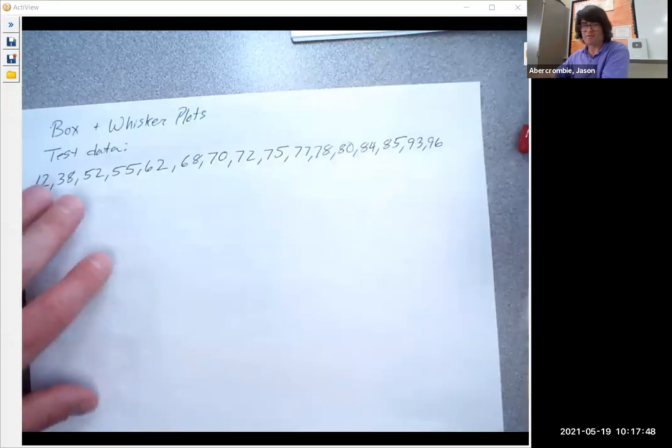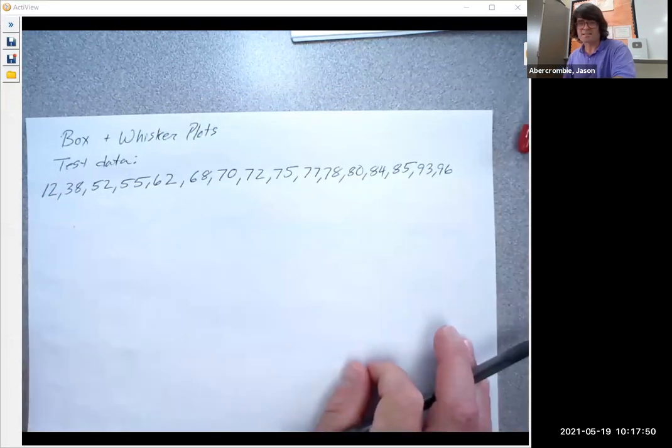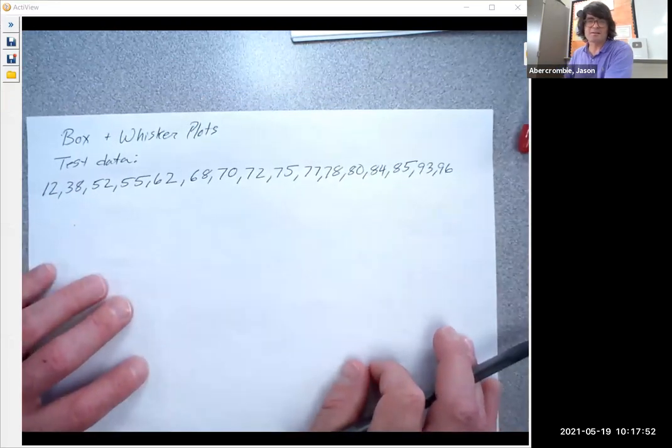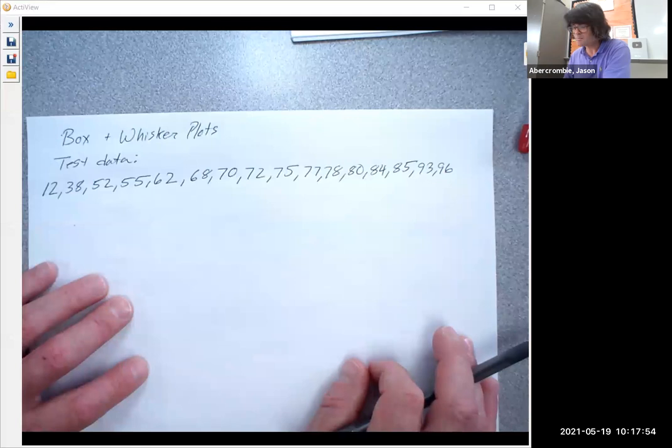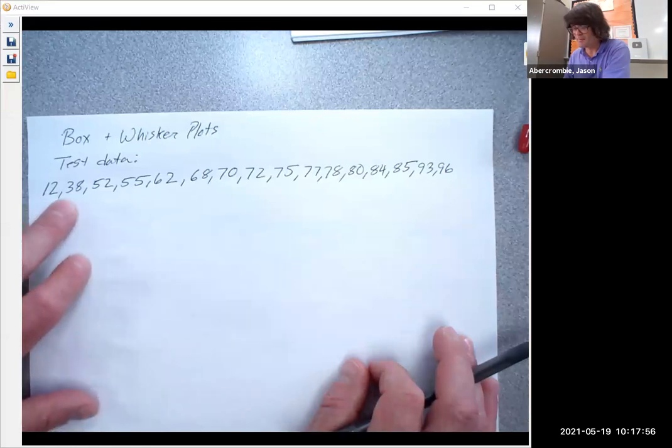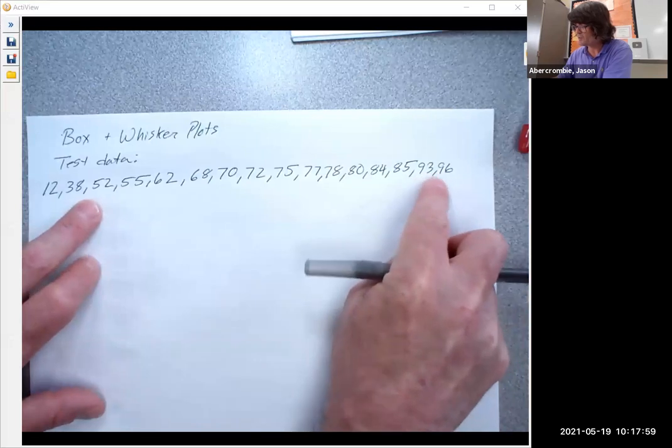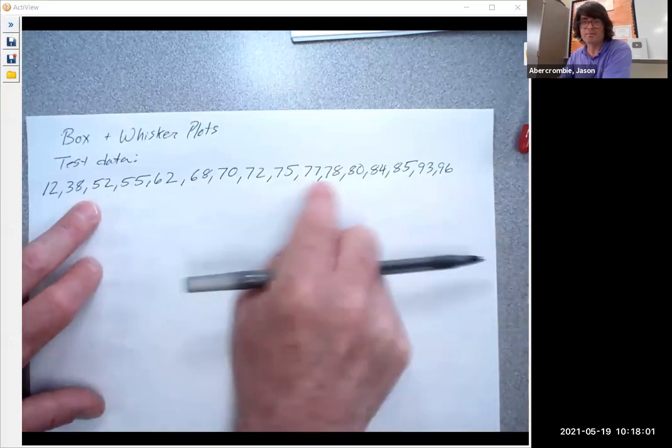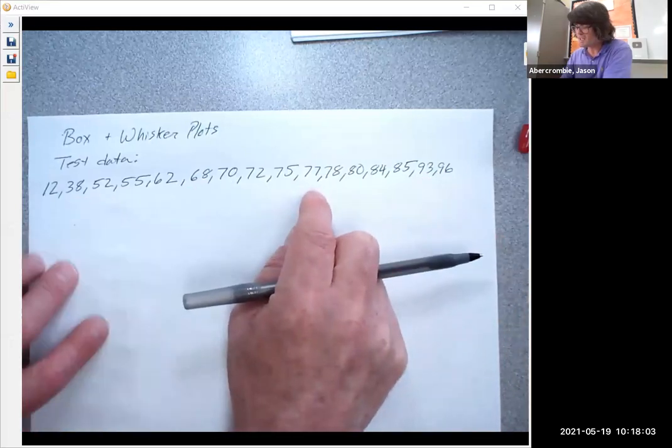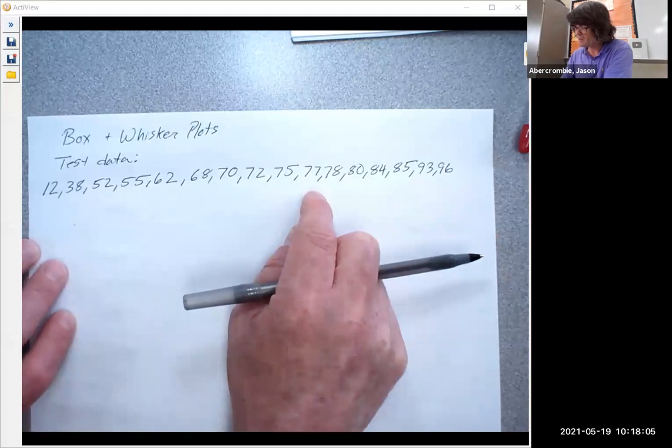So let's look at my data here I've compiled. This is 16 data points for test scores. The lowest is 12%, 38%. And then we've got people that are making high scores, and then a bunch in the middle. So like I said, let's just kind of identify what we've got so far.